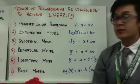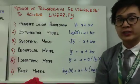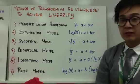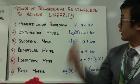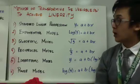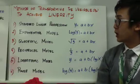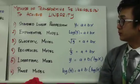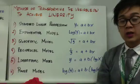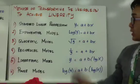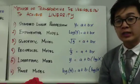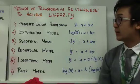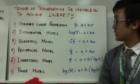There are several methods for transforming variables to achieve linearity. The first is standard linear regression, which is the original form of our model: y equals a plus bx. We can also perform an exponential model, quadratic model, reciprocal model, logarithmic model, or the power model. Essentially, we are transforming our explanatory variable or response variable to achieve linearity in our bivariate dataset.